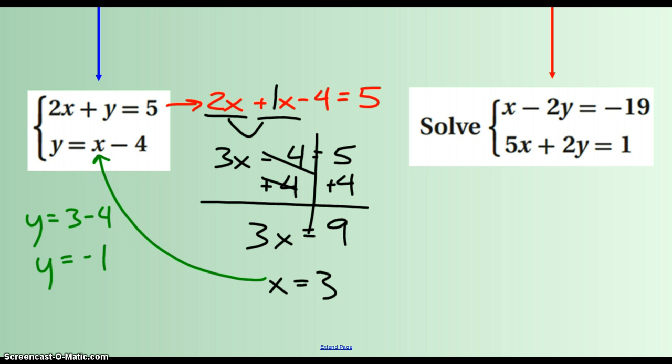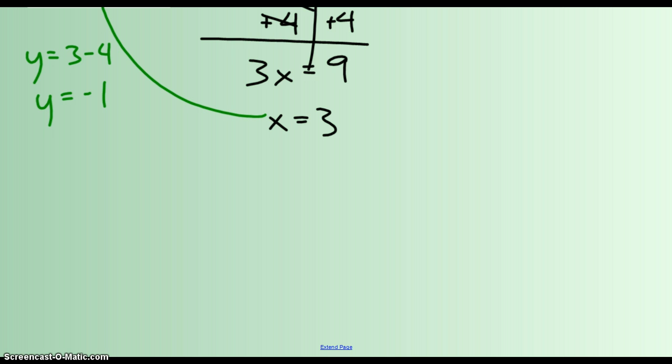So the point where these two lines would cross, the solution would be 3, negative 1.